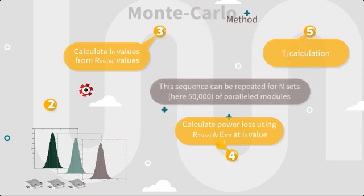This sequence can be repeated here for 50,000 sets of three modules and then the normal distribution of junction temperatures can be plotted.